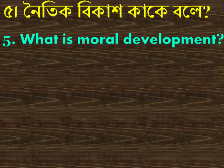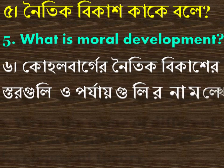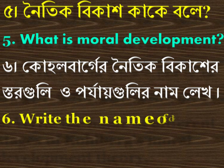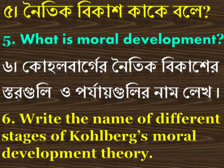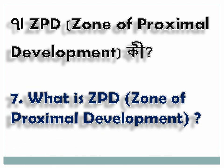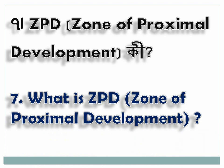Number 5: 'Noithik vikash' — What is moral development? Number 6: Kohlberg's 'Noithik vikash' stages — Write the name of the different stages of Kohlberg's Moral Development Theory. What is ZPD? ZPD is the Zone of Proximal Development. This is Part 1.